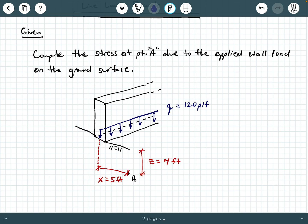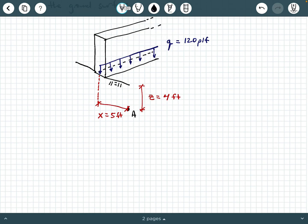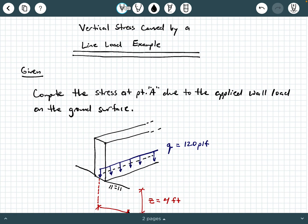Now the point A we're interested in is 4 feet below the ground surface, so that gives you a Z value of 4 feet, and it is 5 feet away from the center line of the wall. So this is all given information. Now, what I like to do under the solution is to maybe redraw a two-dimensional figure first to help us visualize what's going on a little bit better.